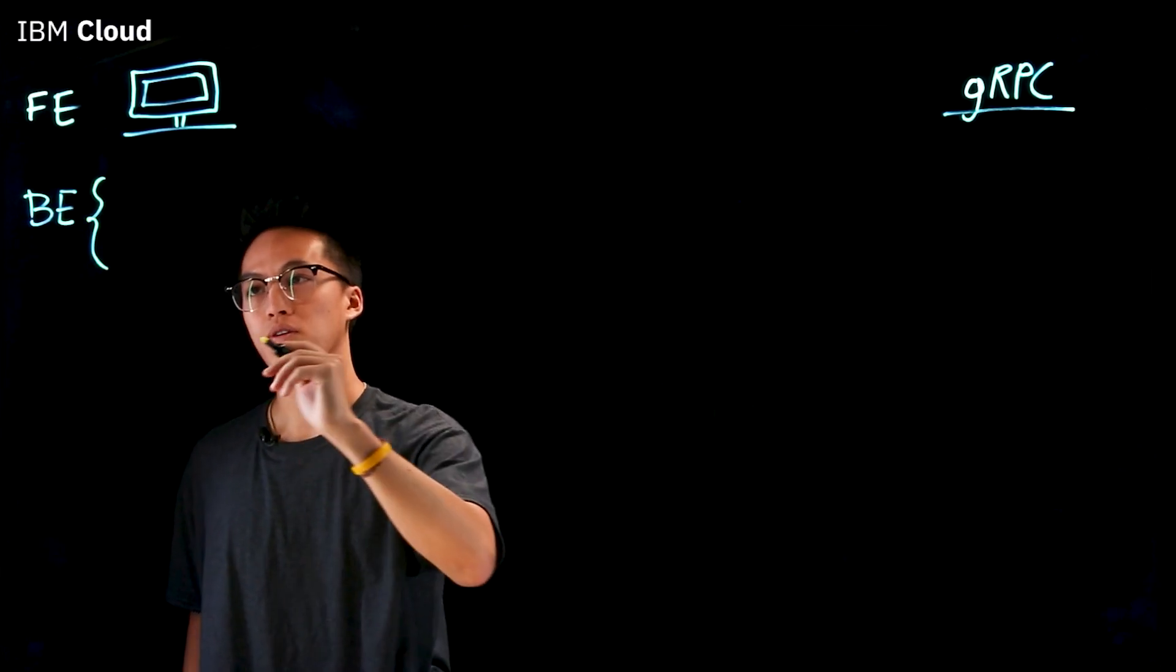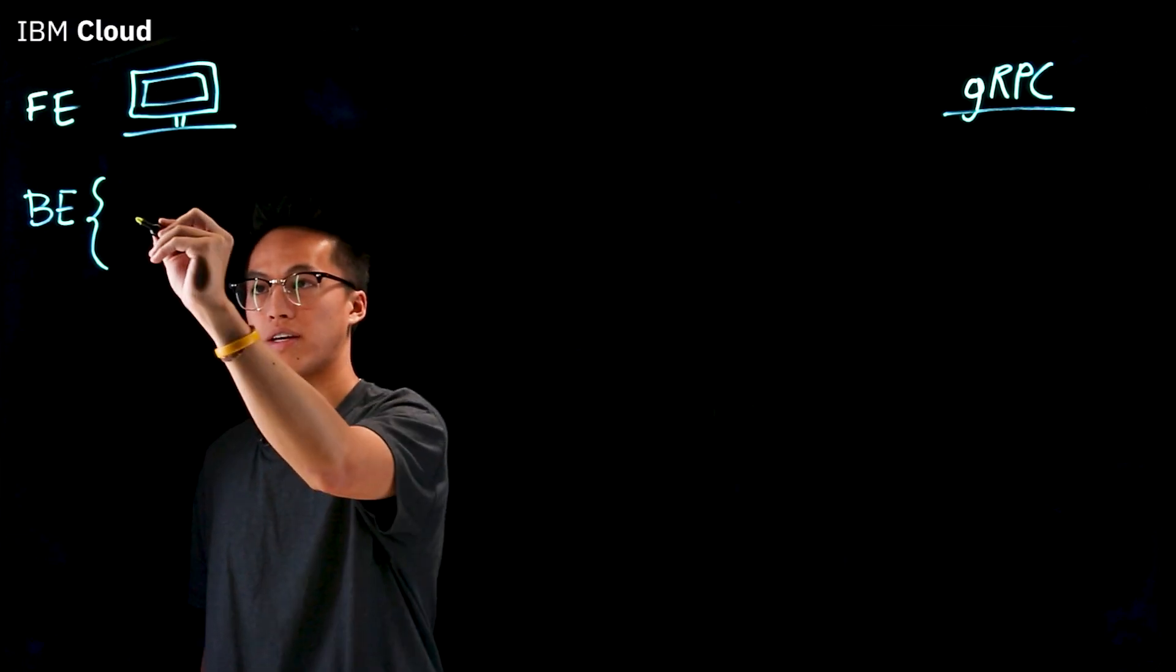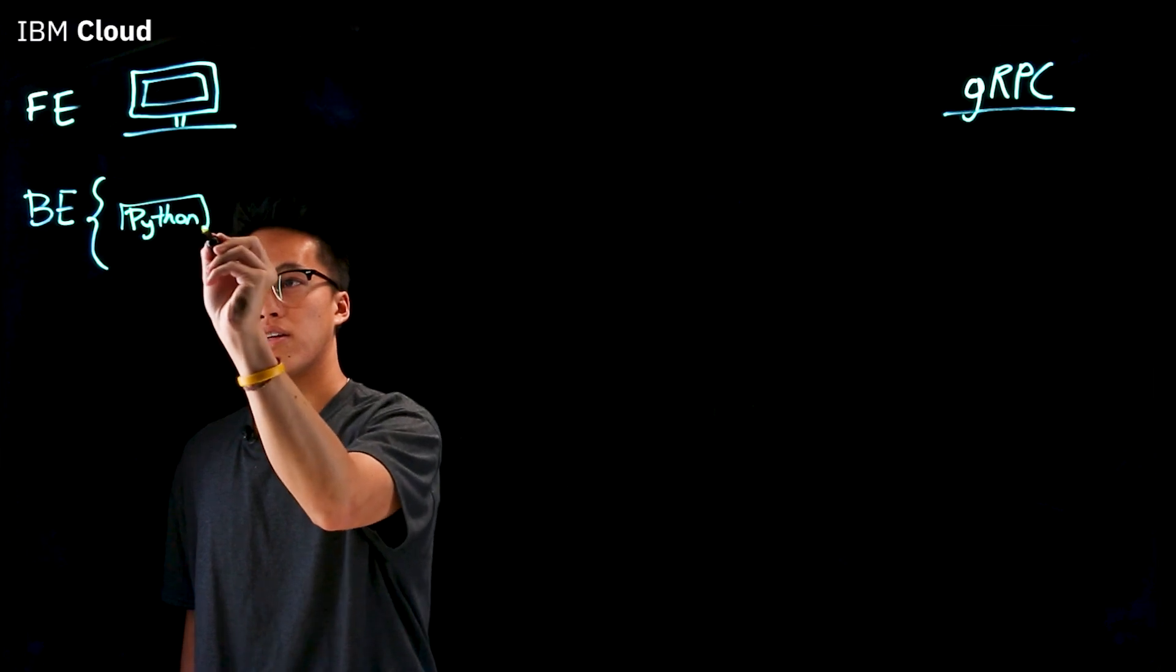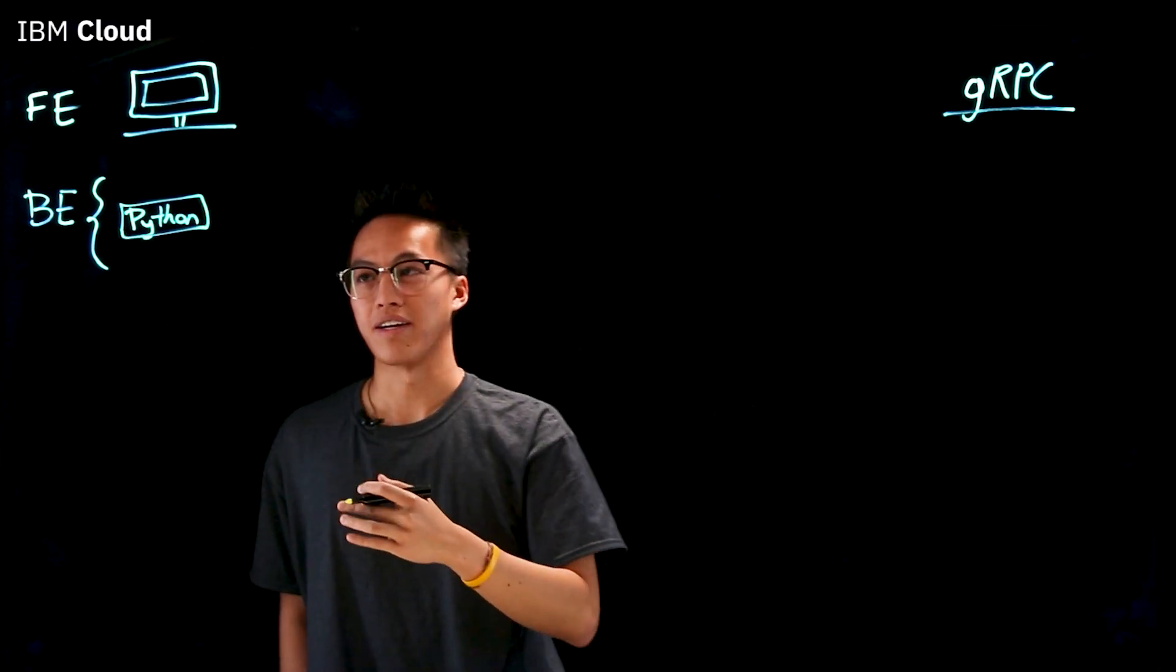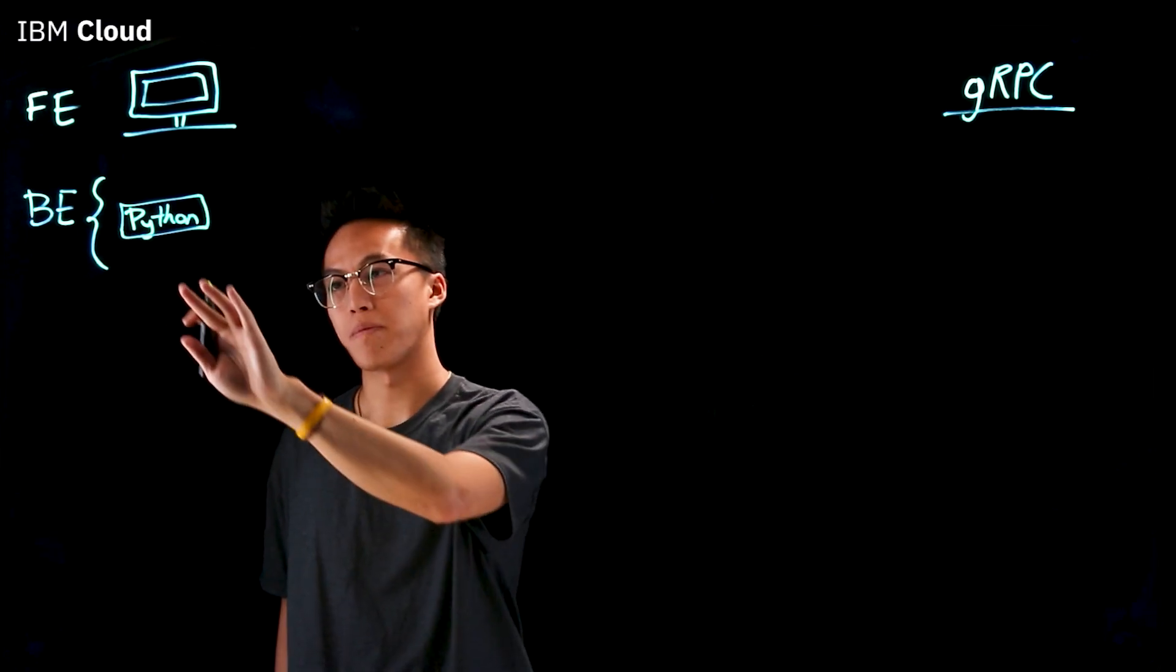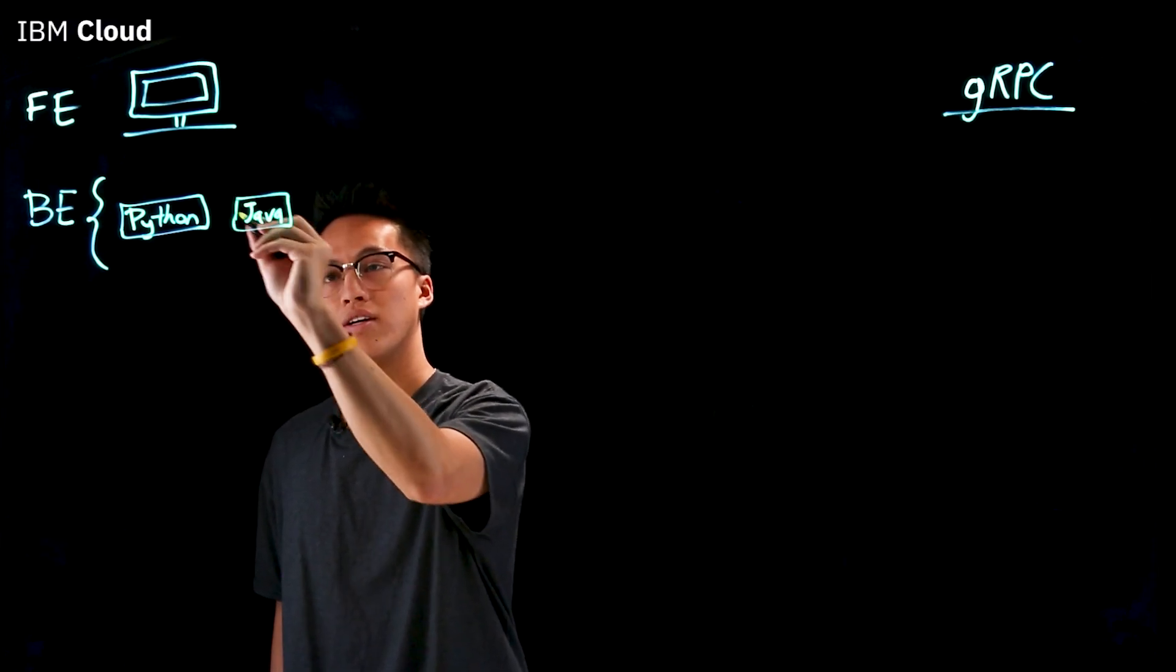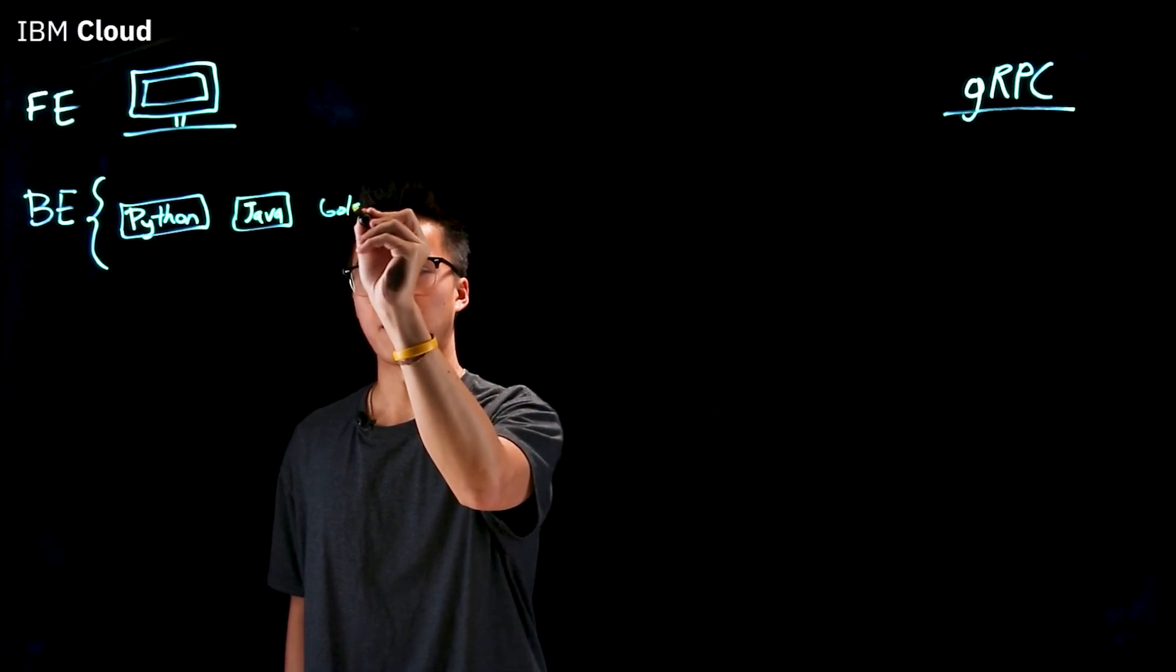So let's say in our example we have a back-end microservices layer of Python. So let's say Python handles something like analytics. It doesn't really matter, but Python is one microservice and let's say we have another in Java and one in Golang for example.